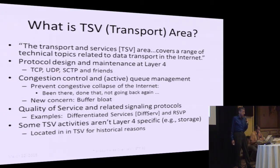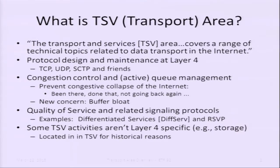Congestion and buffer bloat — we'll talk about this under active queue management. This is the latest thing going on in equipment that's making networking do unexpected things. We cover quality of service related signaling protocols, for example differentiated services and maintenance work on RSVP, which is a signaling protocol for quality of service. Storage activities are here in part because storage moves a lot of data, and protocols that move a lot of data need to get the transport aspects right — get them wrong and things go wrong faster and worse.